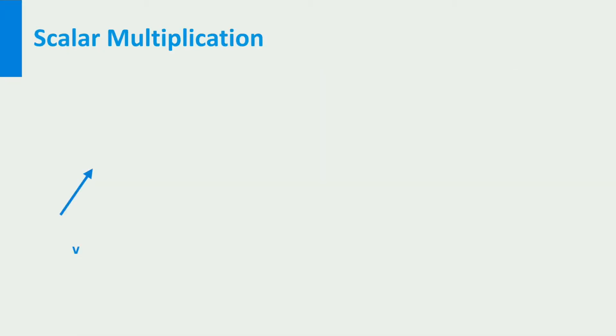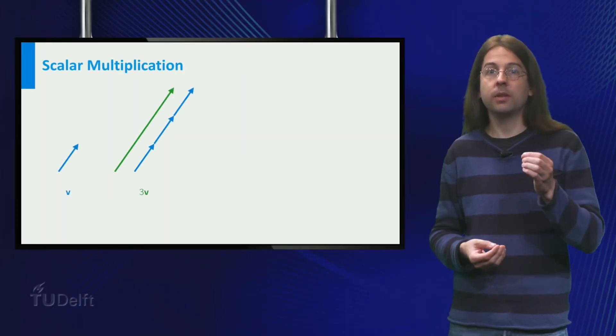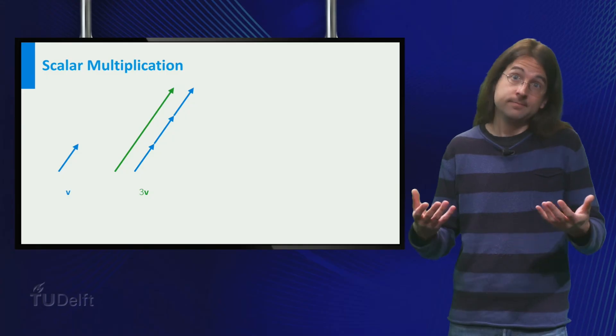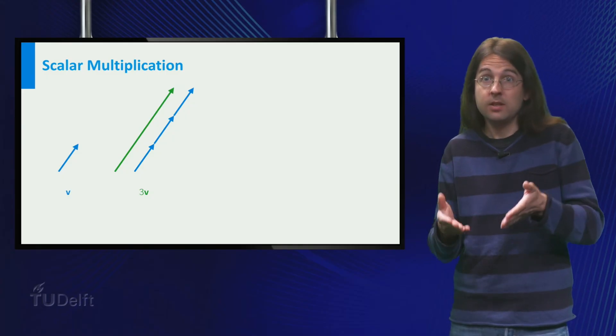Another operation on vectors is the scalar multiplication. A scalar is just a fancy word for a regular number. We use scalar to distinguish it from a vector. Thus scalar multiplication is a multiplication of a vector with a number. What happens if you multiply a vector v by 3? The direction of the vector stays the same, but the length is tripled. Thus it is the same as v plus v plus v.